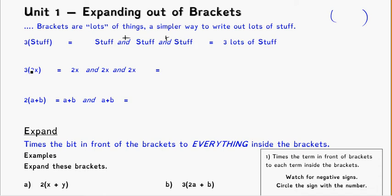Looking at the next example: three bracket two x. Well, two x is just some more stuff, and that means I've got three two x's — a two x, and a two x, and a two x. That 'and' is going to be plus. If you think about adding like terms, two x and two x and two x are all like terms — in fact they're all the exact same thing. If I've got three of them, that's two plus two is four, plus two is six, for a total of six x.